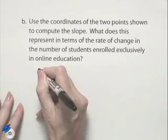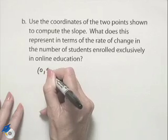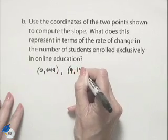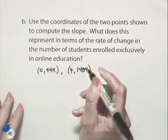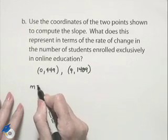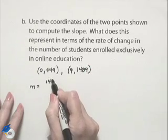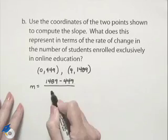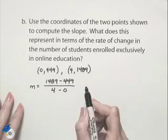So again, let's transfer those over, 0, 449, and 4, 1489. To find the slope, we're going to take the difference in our Y values, which would be 1489 minus 449 divided by the difference in our X values, 4 minus 0.